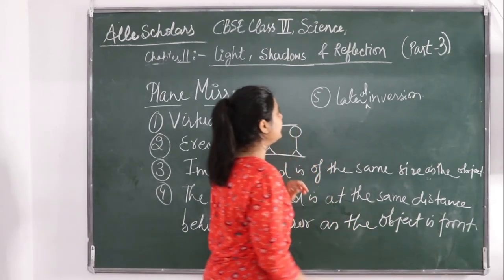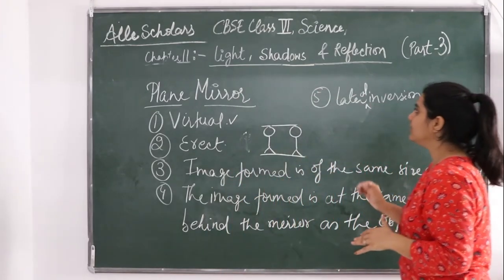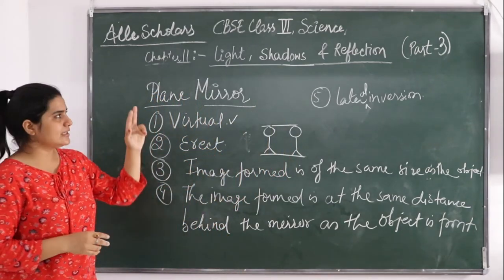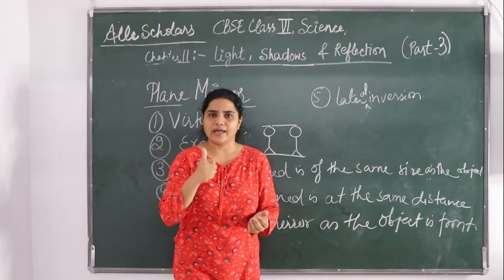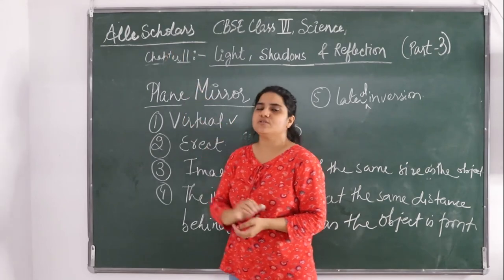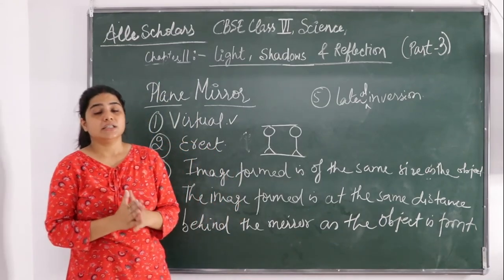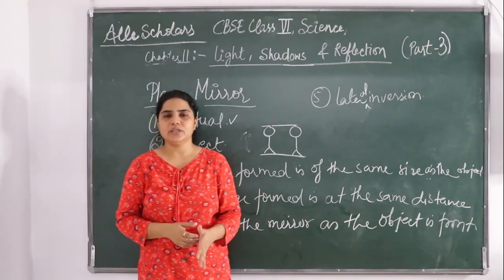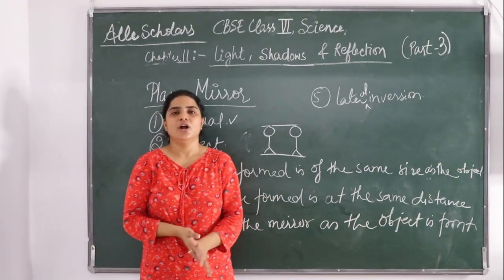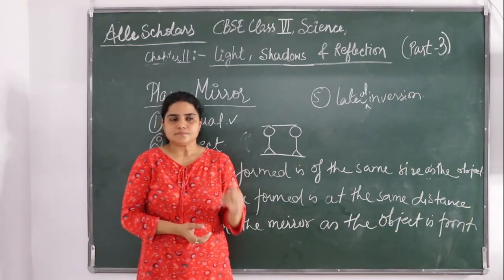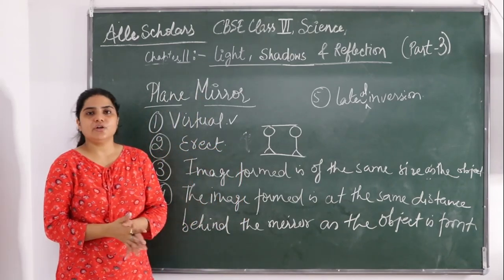So lateral inversion means the right appears to be left and the left appears to be right. This was all for Chapter 11 on Light, Shadow and Reflection. Part 1 and Part 2 are also available — you can refer to those to get the whole chapter. Thank you so much for watching. If you liked the video, please give a like and subscribe for daily updates. The link to our app is in the description — download it for interesting videos, PDF notes, and MCQ questions according to your syllabus.